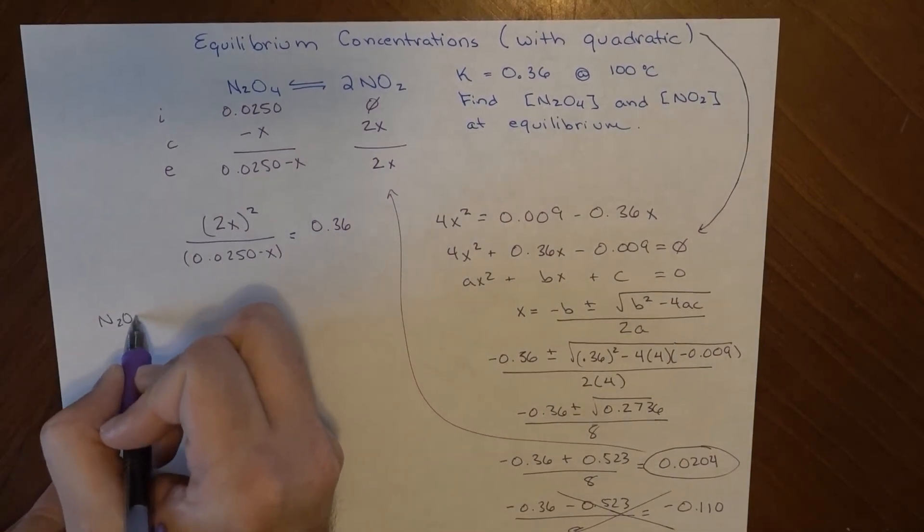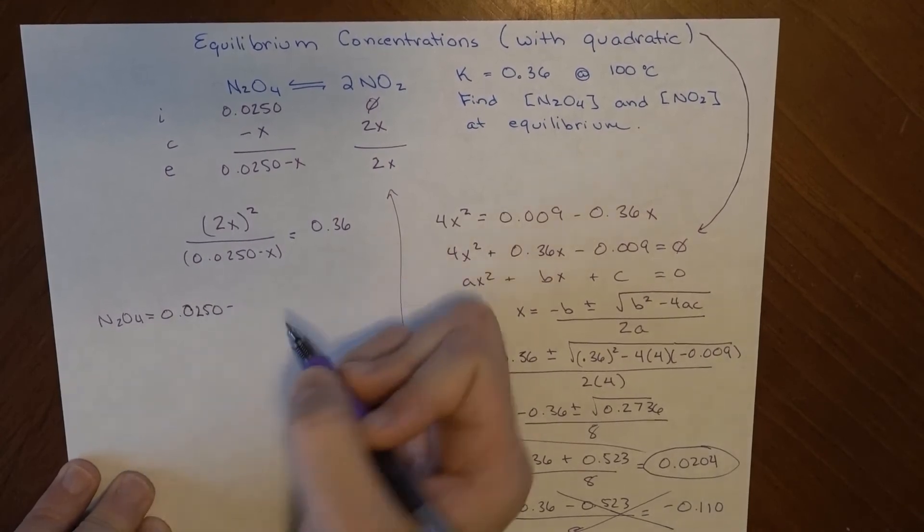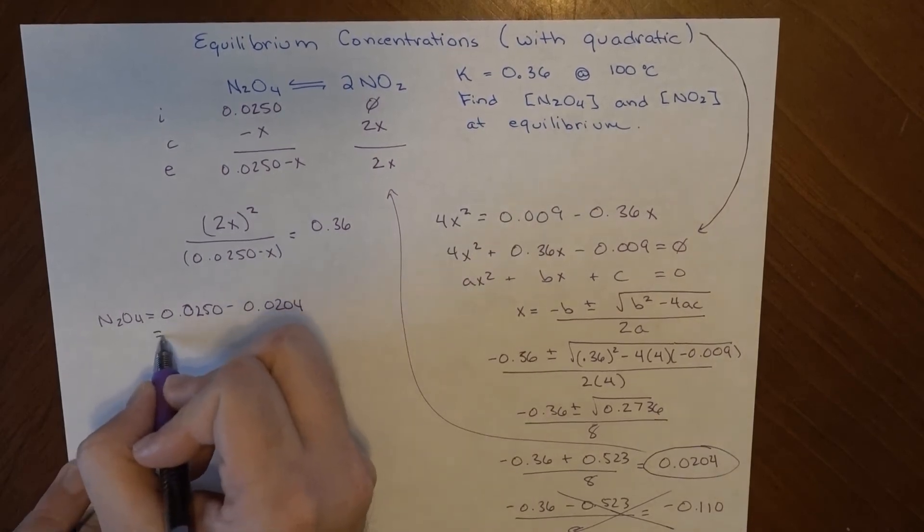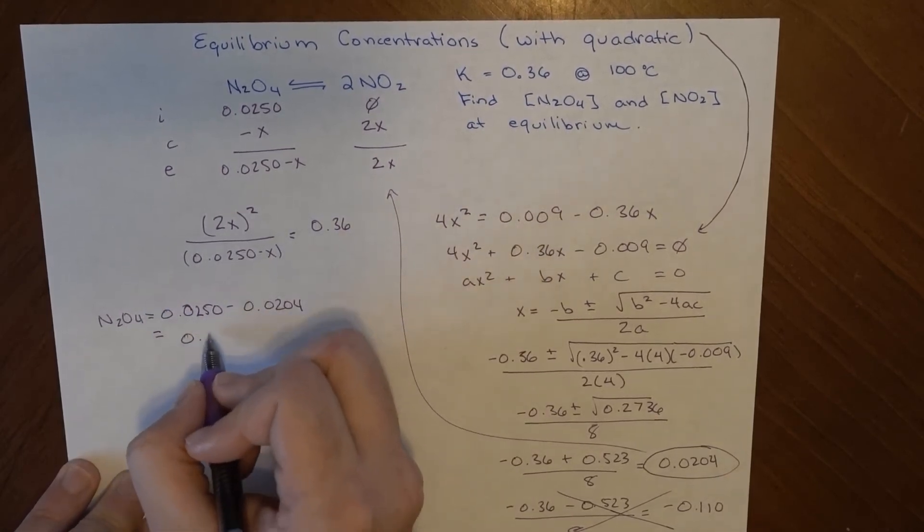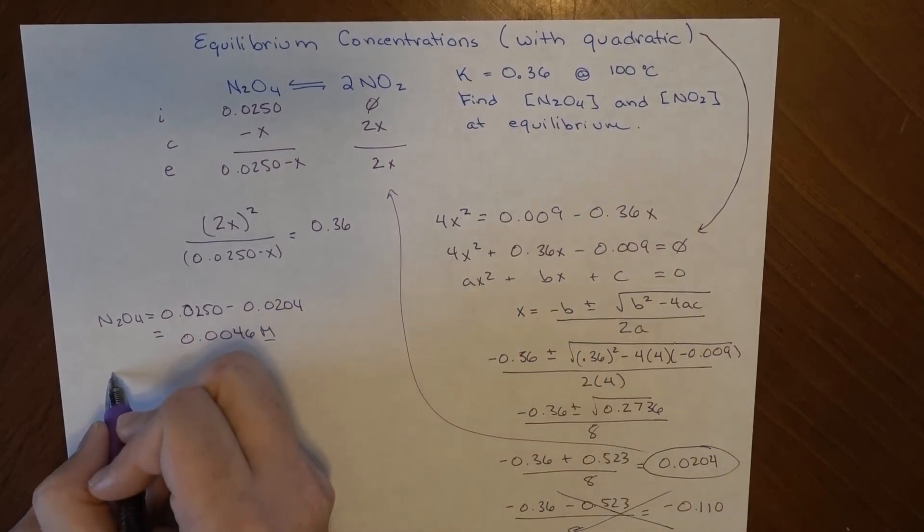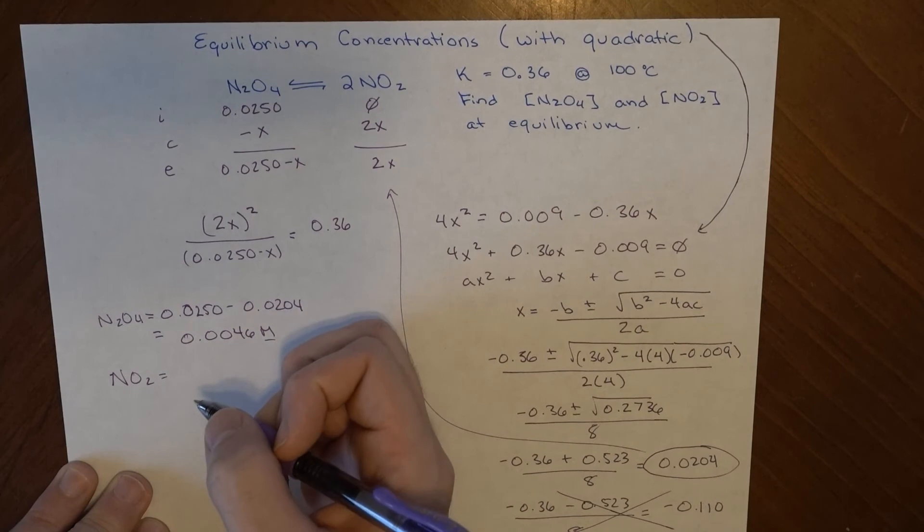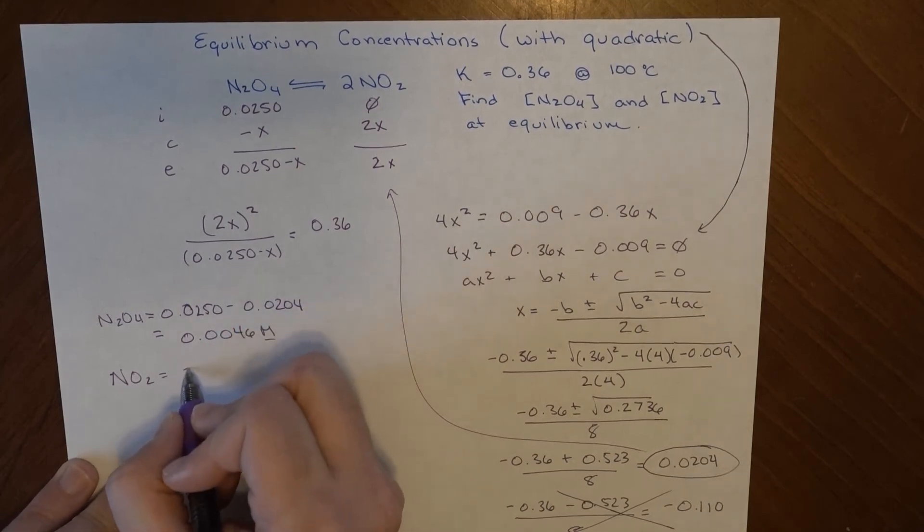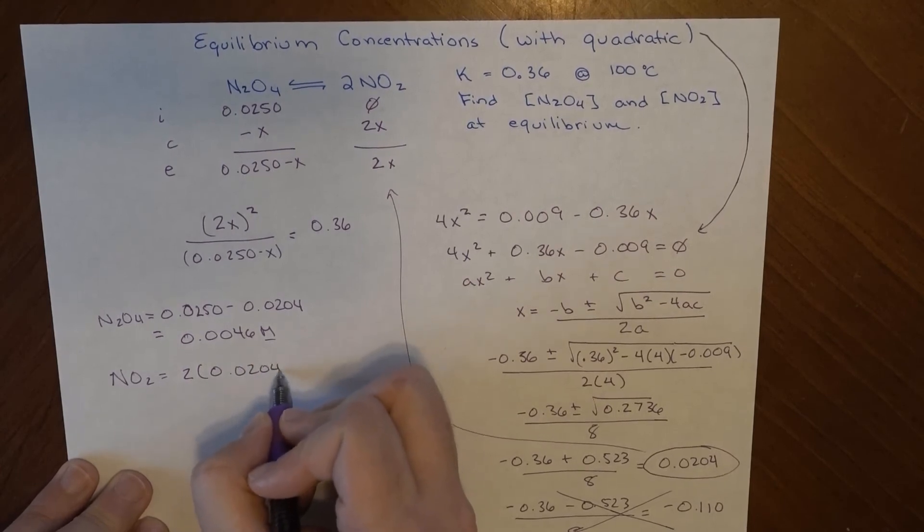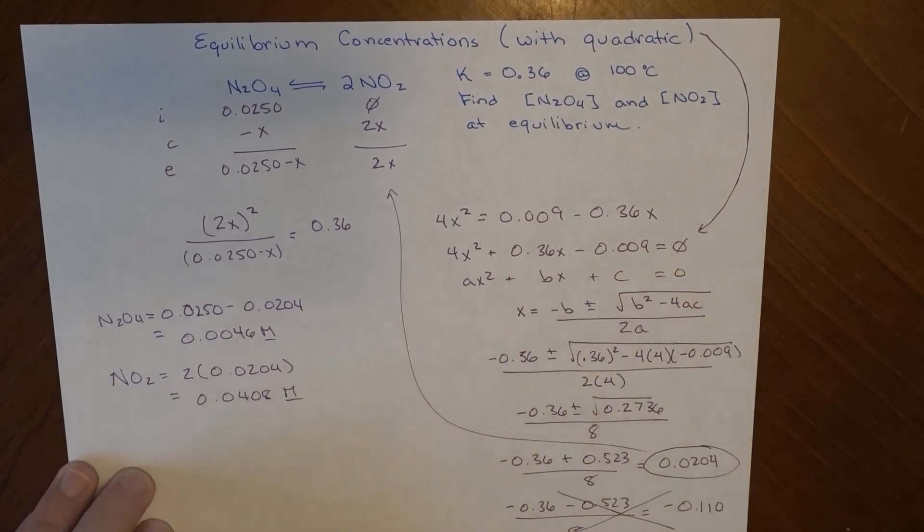So my N2O4, that's equal to 0.0250 minus 0.0204, and that will come out to 0.0046 molar at equilibrium. And then my NO2 is going to be equal to 2 times this number. So 2 times 0.0204, and that's going to be equal to 0.0408 molar at equilibrium.